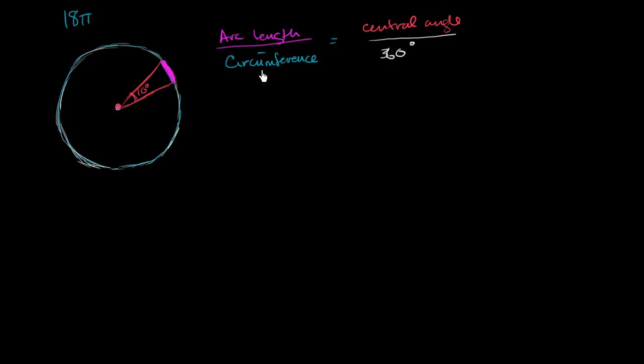So let's just think about that. We know the circumference is 18π. We're looking for the arc length, I'm just going to call that A. A for arc length. That's what we're going to try to solve for. We know that the central angle is 10 degrees, so you have 10 degrees over 360 degrees.